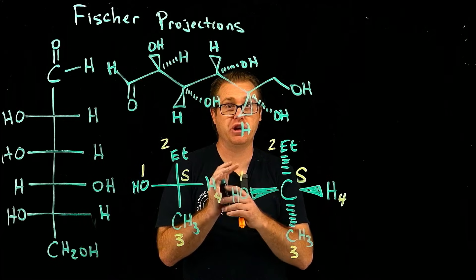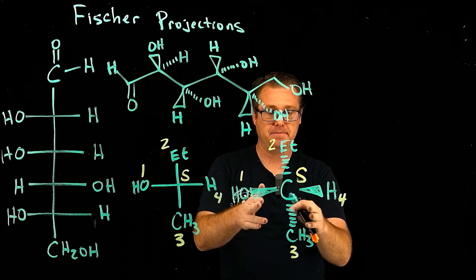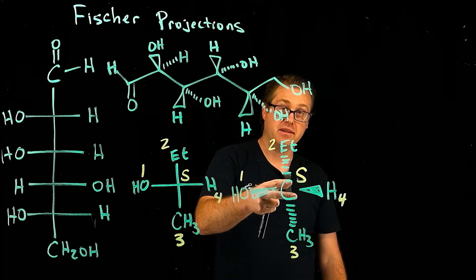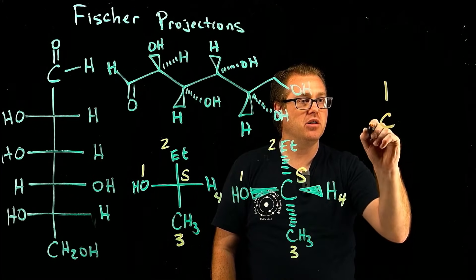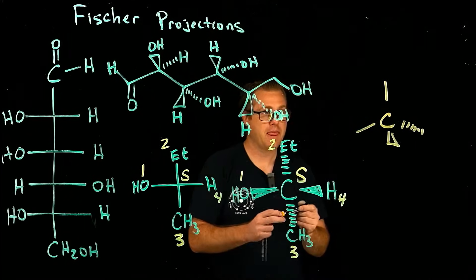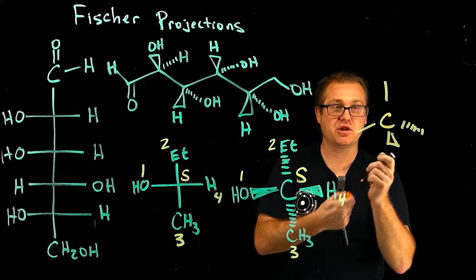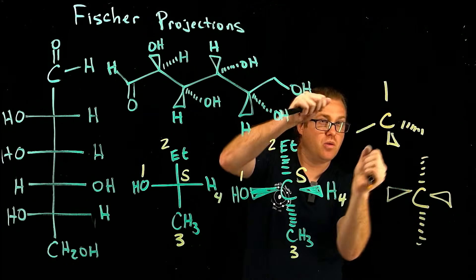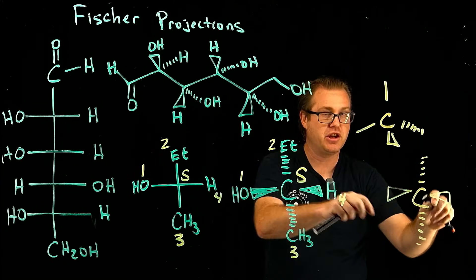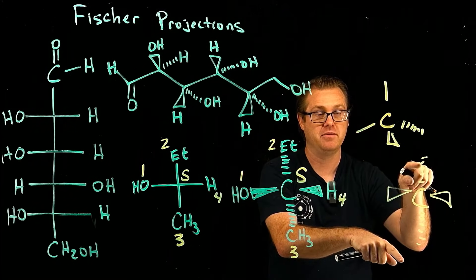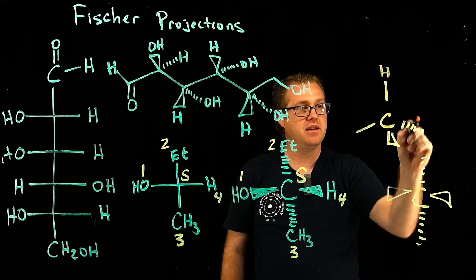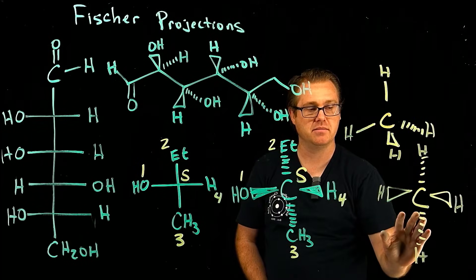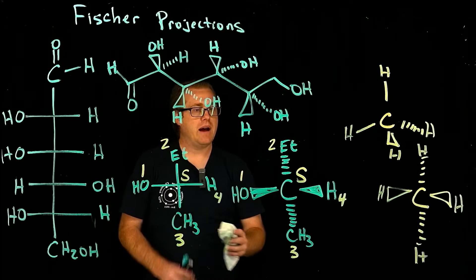I recommend making a physical model of this molecule. When you build that model, you'll be able to see that Fisher projections can look like this — you can actually take a molecule and spin it so that two groups are pointing out at you and two groups are pointing back. You can orient it to match the Fisher projection exactly. I highly encourage you to get a model kit and do that.